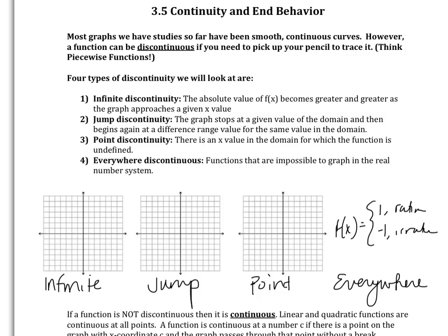So there's four types of discontinuity. Infinite discontinuity, which means the absolute value of the function, y, becomes greater and greater as the graph approaches a given value of x. So an example of those are rational functions, meaning fractions. There's often asymptotes involved in those. And they usually look something like this. If you think about it, as your value of y is increasing, your value of x is also increasing everywhere on that graph. But it's not one continuous line because you need to pick up your pencil to graph it.